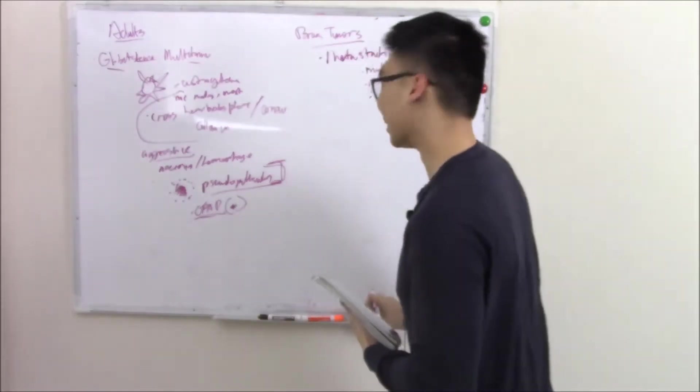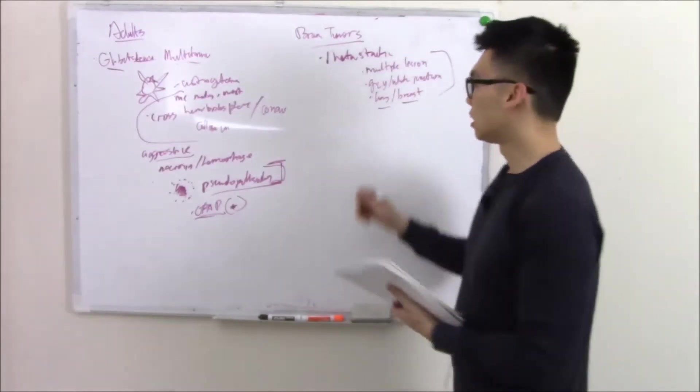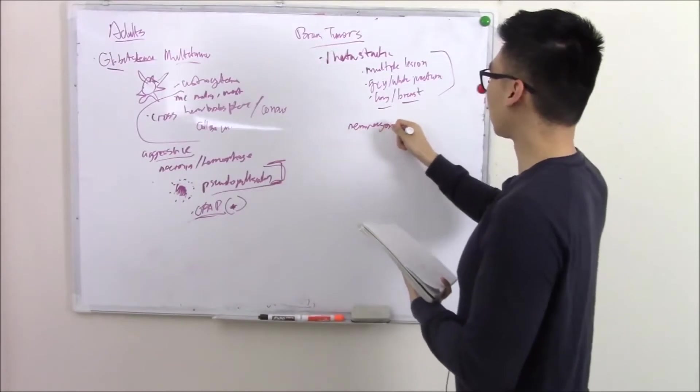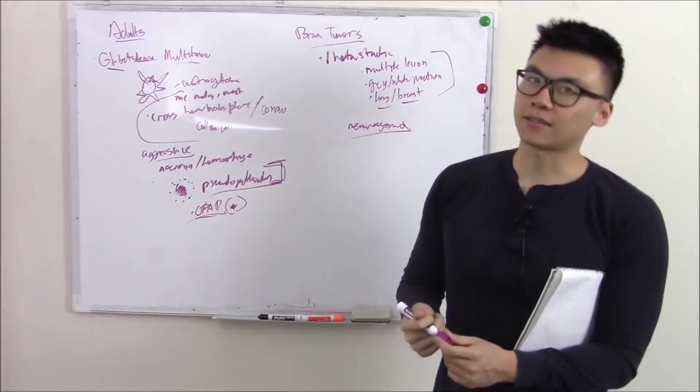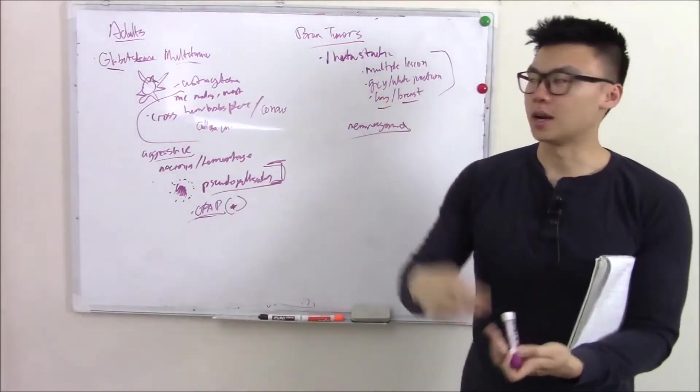That's your most common malignant, but what's your most common benign or actually your most common overall? Your most common overall is your meningioma. What do you think your meningioma is? A tumor of your meninges. That's not very helpful. Your meninges is made up of three layers. Hopefully you remember dura, arachnoid, pia.